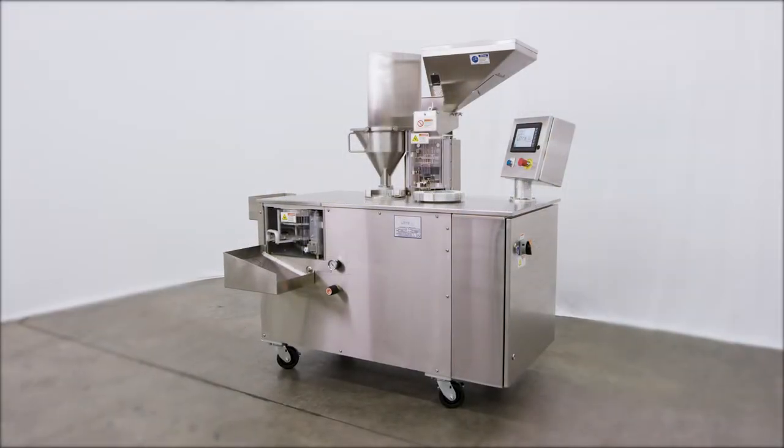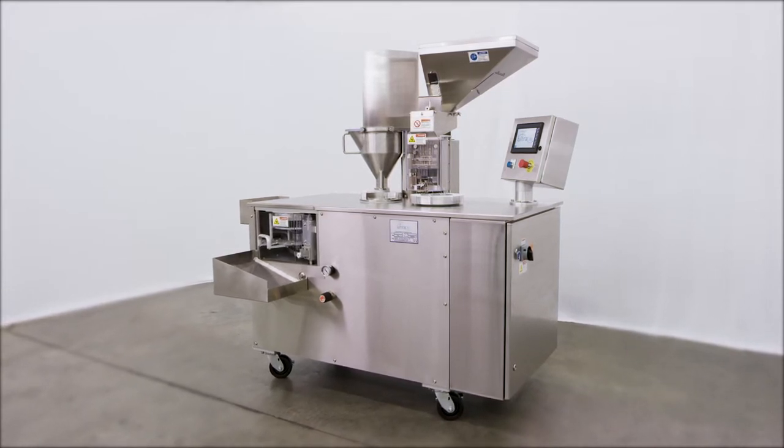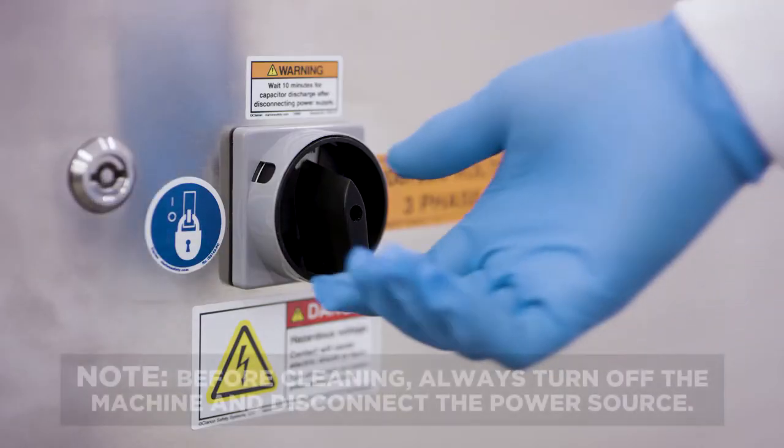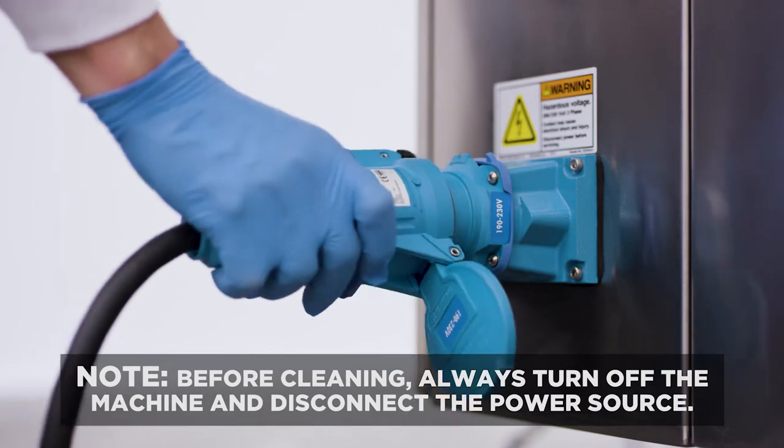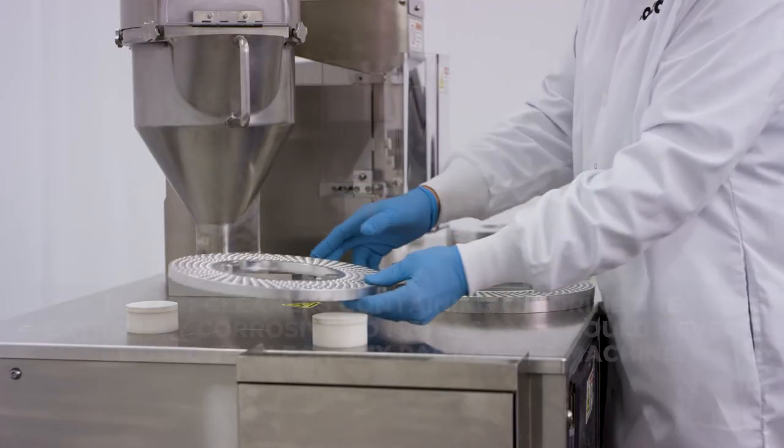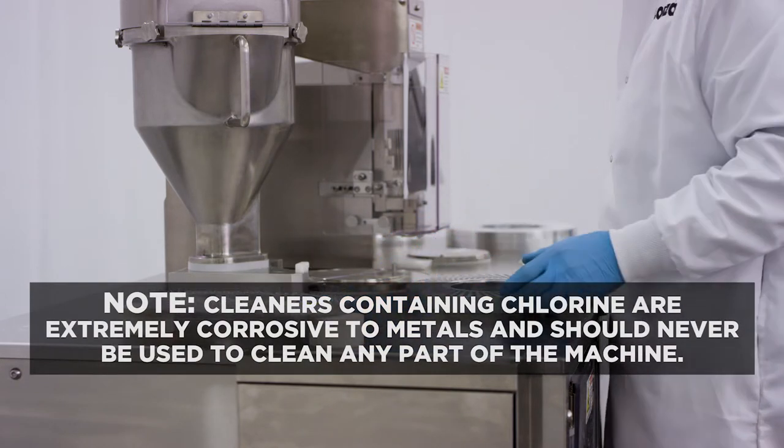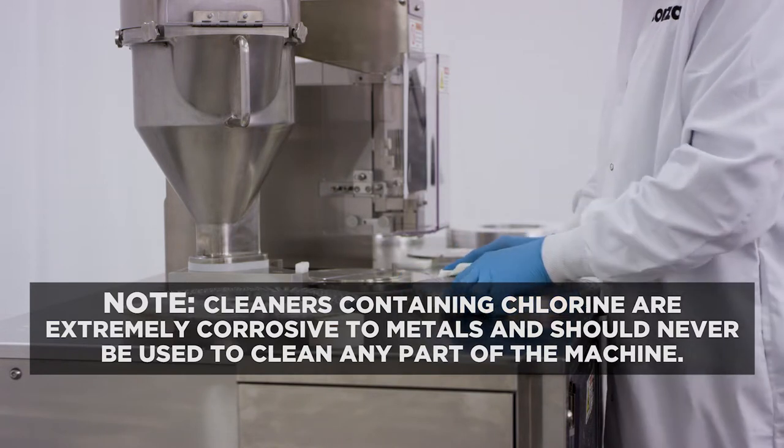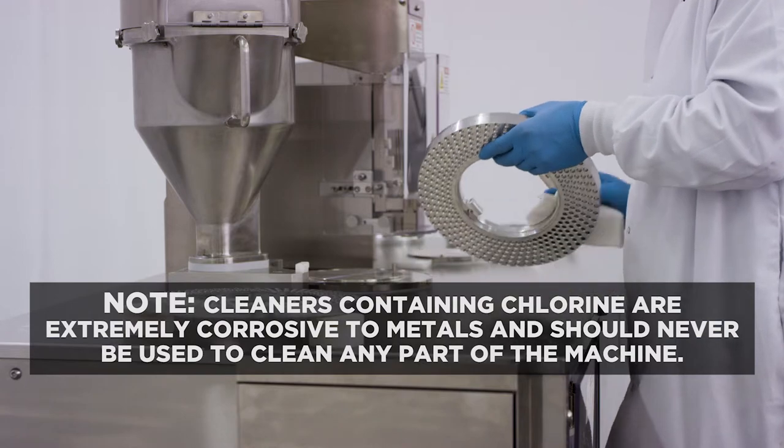Cleaning is important for the maintenance of the Capsigel Ultra 3. The machine should be cleaned after every use and whenever swapping out products. Before cleaning, always turn off the machine and disconnect the power source. Separate the fill ring assembly and wash it with a mild soap solution. Thoroughly rinse and dry the rings and rectification parts. Please note that cleaners containing chlorine are extremely corrosive to metals and should never be used to clean any part of the machine.